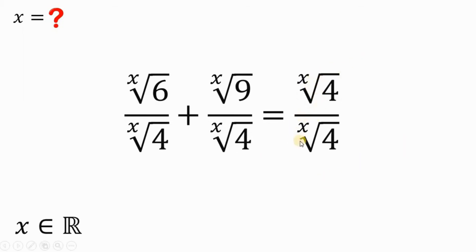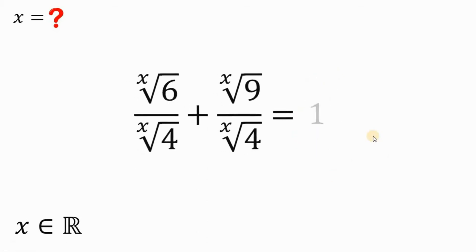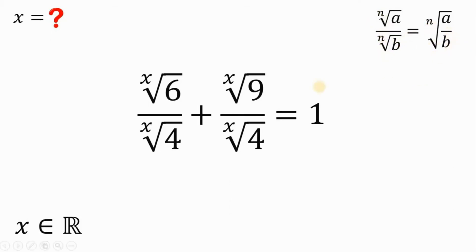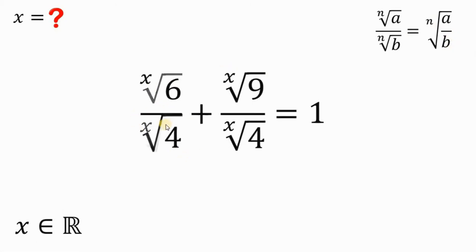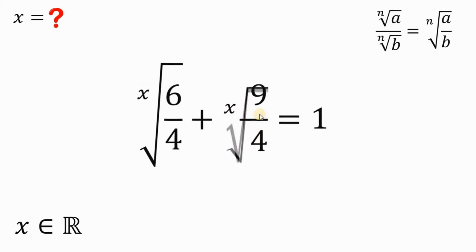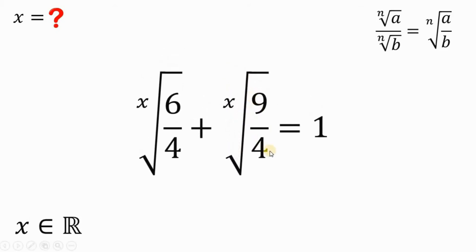x root of 4 over x root of 4 is just 1. Now, let's take note of this law of radicals: if we have n root of a over n root of b, it is equivalent to n root of a over b. Therefore, x root of 6 over x root of 4 can be written as x root of 6 over 4. Also, x root of 9 over x root of 4 can be written as x root of 9 over 4.